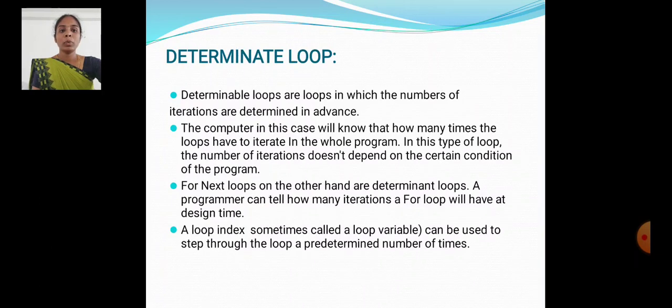Determinate loop. Determinate loops are loops in which the number of iterations is determined in advance. The computer in this case will know how many times the loop has to iterate in the whole program. In this type of loop, the number of iterations does not depend on certain conditions of the program.